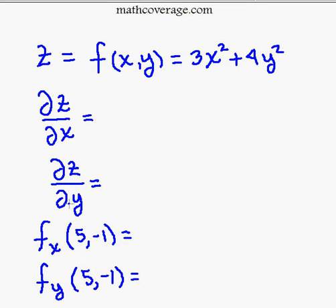When we take the partial of z with respect to x, we want to treat y like it's a constant. So we don't do anything at all with y. Let me just take the derivative here of f(x,y) with respect to x.